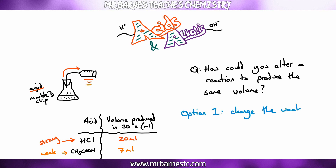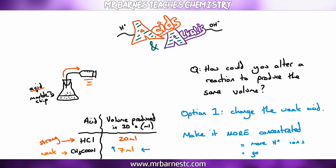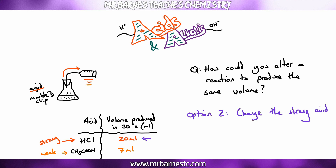There are two options. First, make the weak acid more concentrated — by evaporating off some water — so there are more H+ ions, it reacts faster, and produces more gas in the same time. Second, make the strong acid more dilute, so you have fewer H+ ions, it reacts slower, and less gas is produced in 30 seconds.